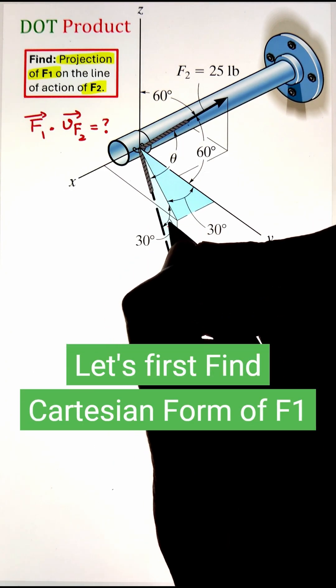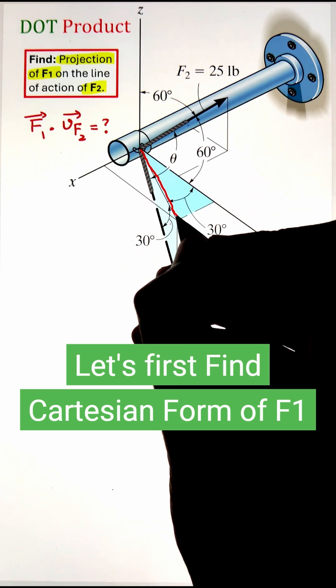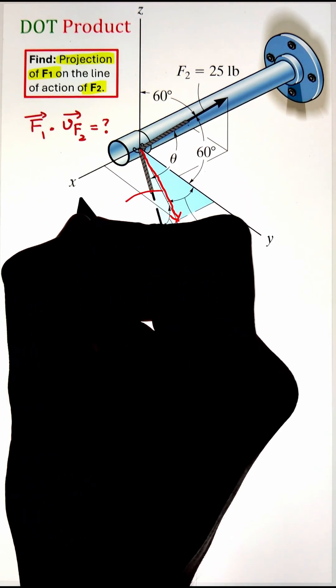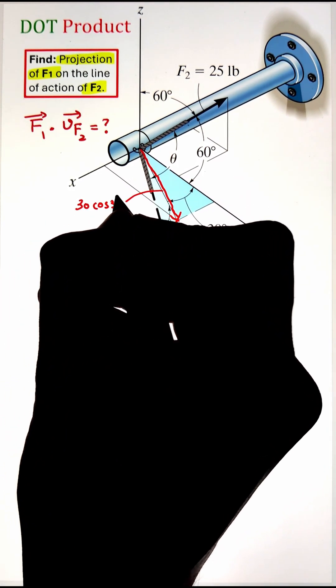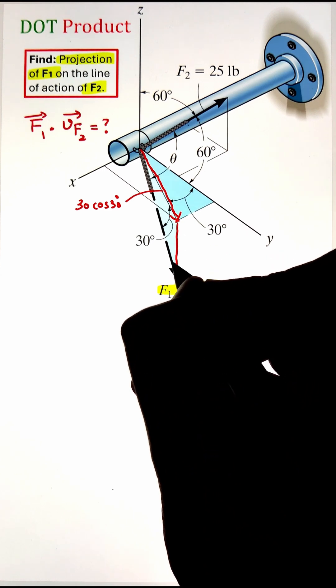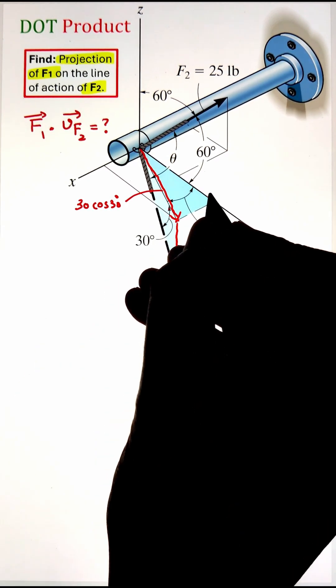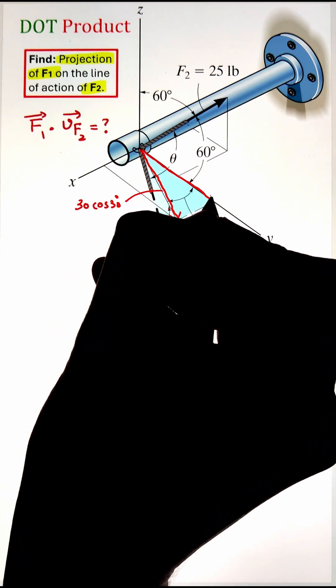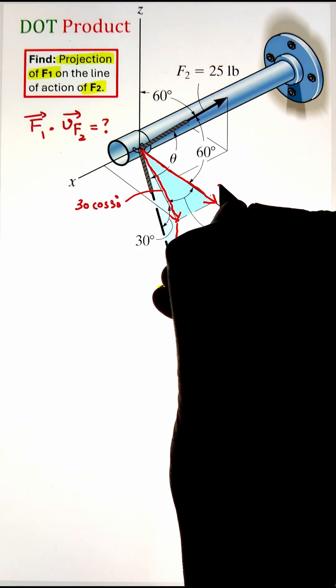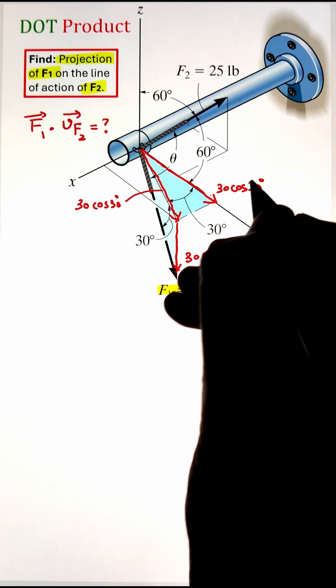To start, force F1 needs to be converted into its Cartesian form, meaning we need to identify its x, y, and z component. Since the vector is given in 3D space, first it is projected along the x-y plane by taking the cos 30 function, whereas the sine 30 function will project it along the negative z direction.